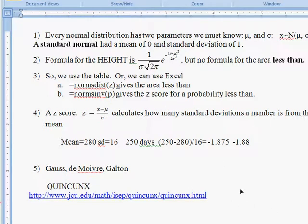In the last few seconds I have left, let me mention something about Gauss, de Moivre, and Galton, who are historical figures associated with the normal distribution.